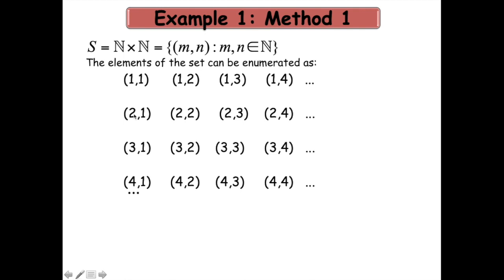In the second row, I am taking those elements where the first component is 2 and the second component varies from 1, 2, 3, 4, and so on. Similarly, I have the third row, fourth row, and in this manner I am going to enumerate all the elements of the set N×N. Now this enumeration follows a sort of diagonal procedure.